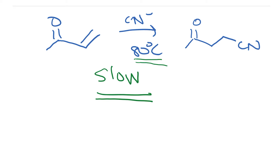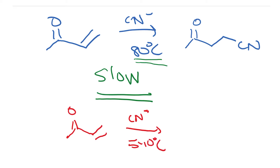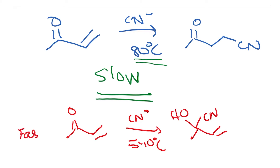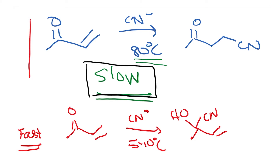To summarize: at low temperatures, somewhere between 5 and 10 degrees centigrade, this reaction gives you the cyanohydrin — CN, OH, and a double bond. This is the fast reaction. The conjugate addition does not occur at 5 to 10 degrees centigrade, so the conjugate addition must be a slow reaction.